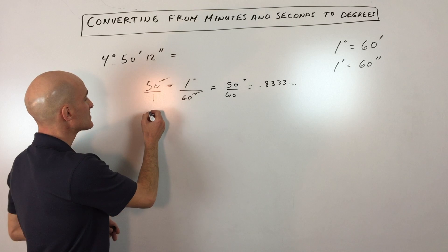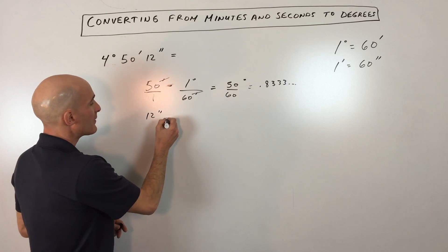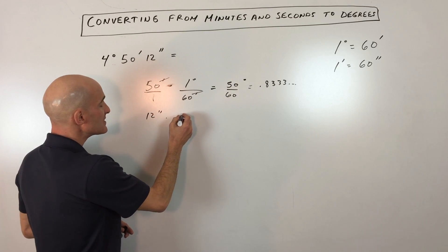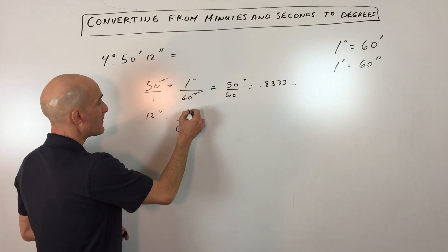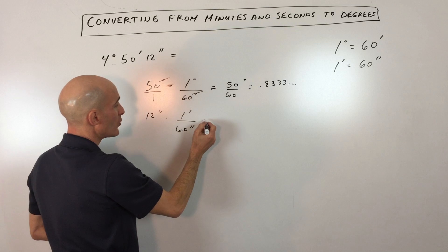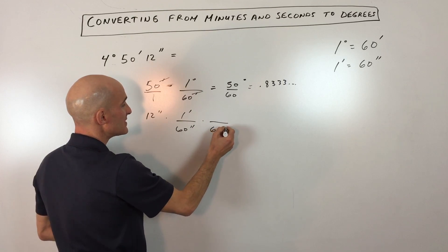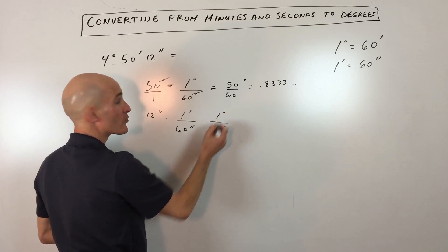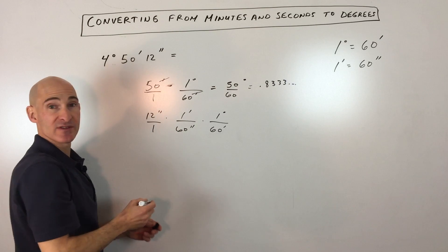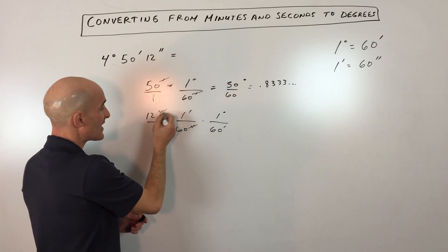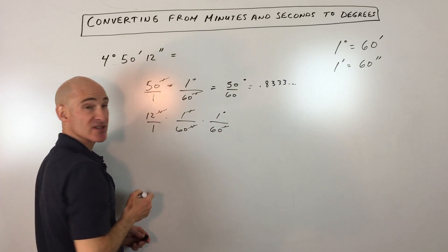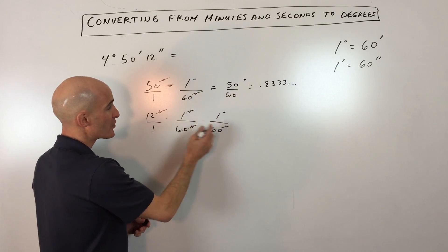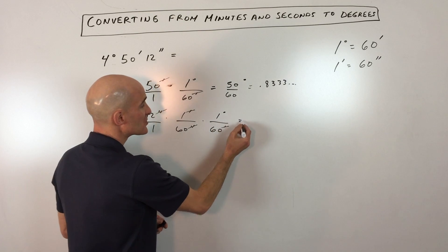Now, if we look at the seconds, the 12 seconds, let's go down here. We know that for every 60 seconds, there is 1 minute, right? And we also know that for every 60 minutes, there is 1 degree. Okay, and the way we've set this up is so that the units that we don't want, see the seconds, they cancel numerator and denominator. And same thing with the minutes, those units cancel, we don't want those, they cancel numerator and denominator. And we're left with degrees, which is the unit that we do want.